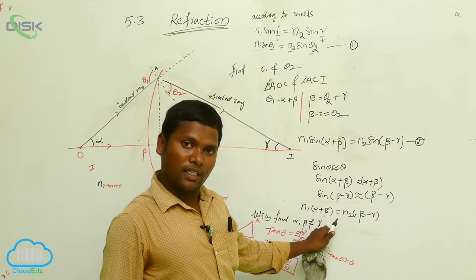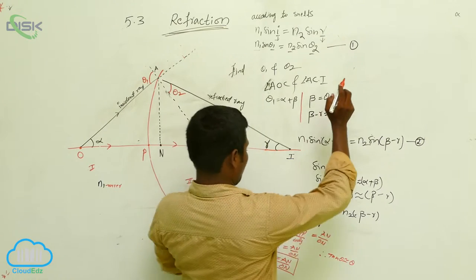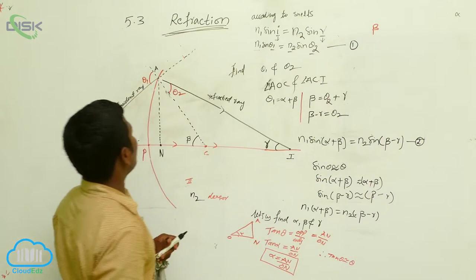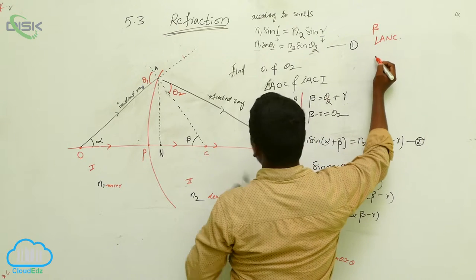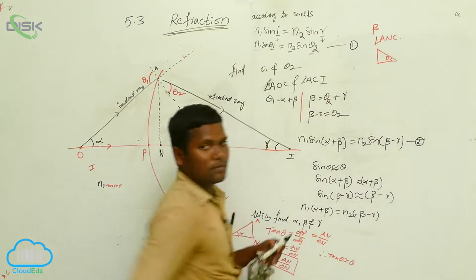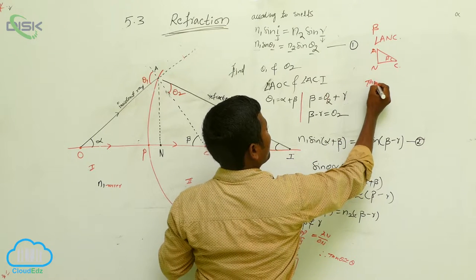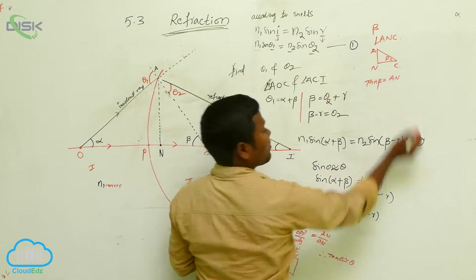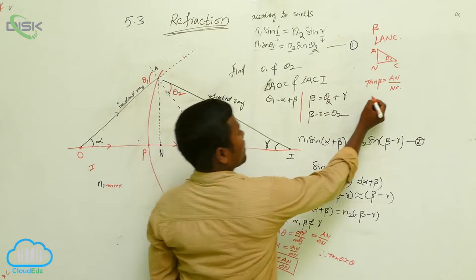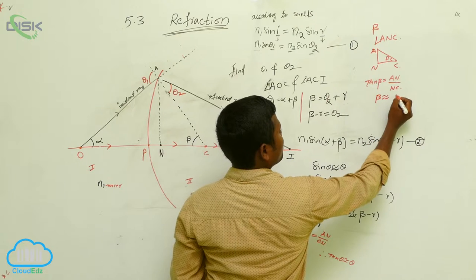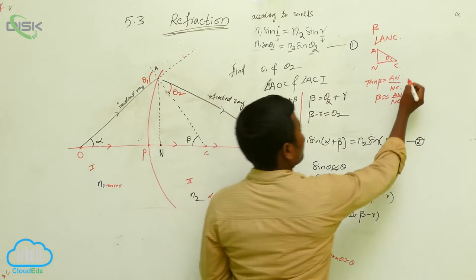If we got the alpha value directly, we can write beta and gamma also. To find the beta value, which triangle do we consider? We consider triangle ANC. In that triangle, beta is there, A is there, N is there, and C is there. So tan beta equals AN by NC. Using the small angle approximation, beta is nearly equal to AN by NC.